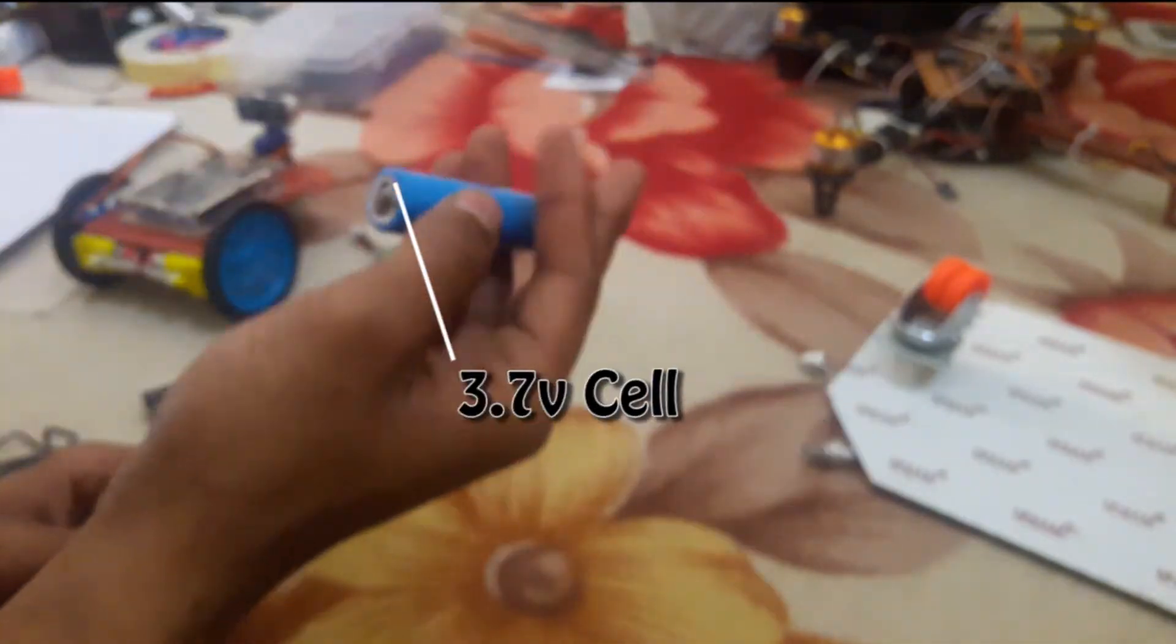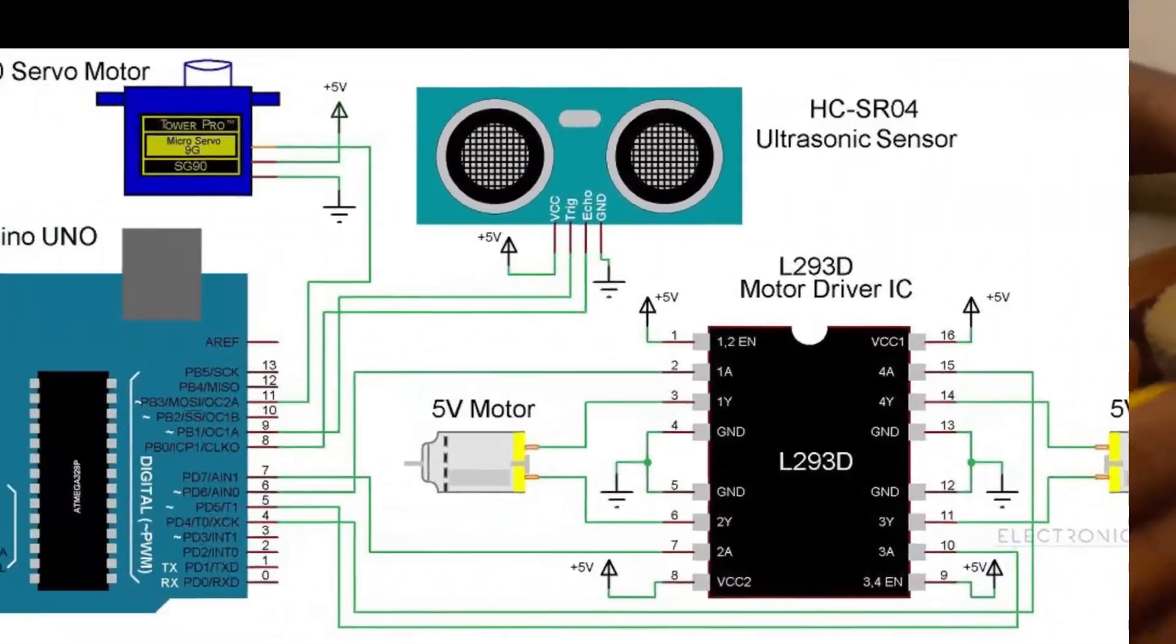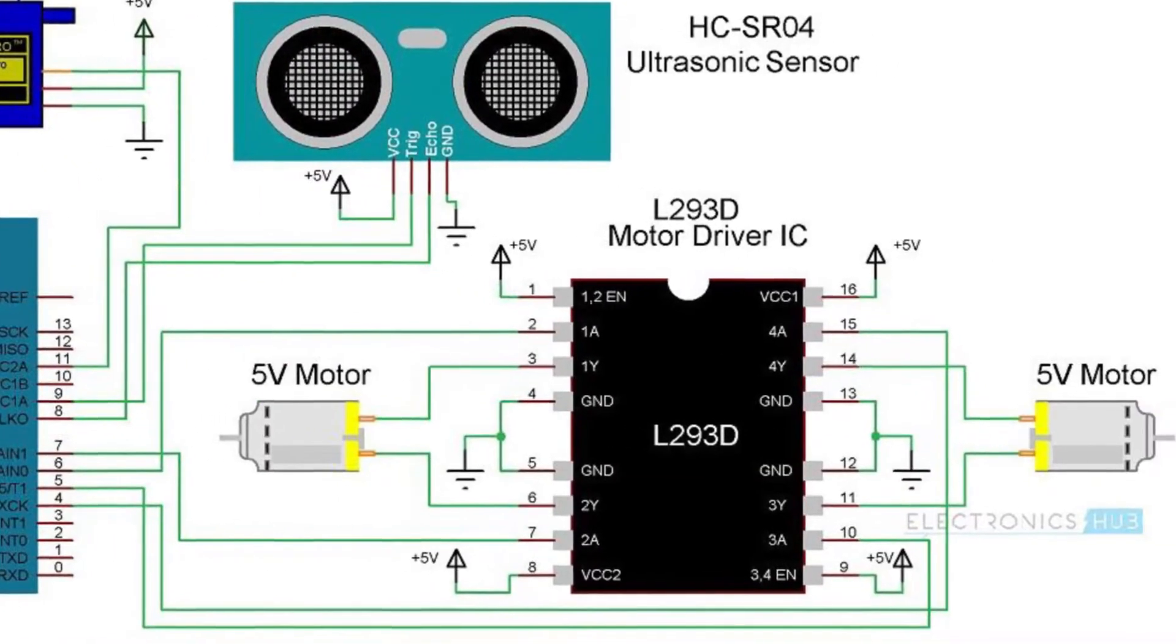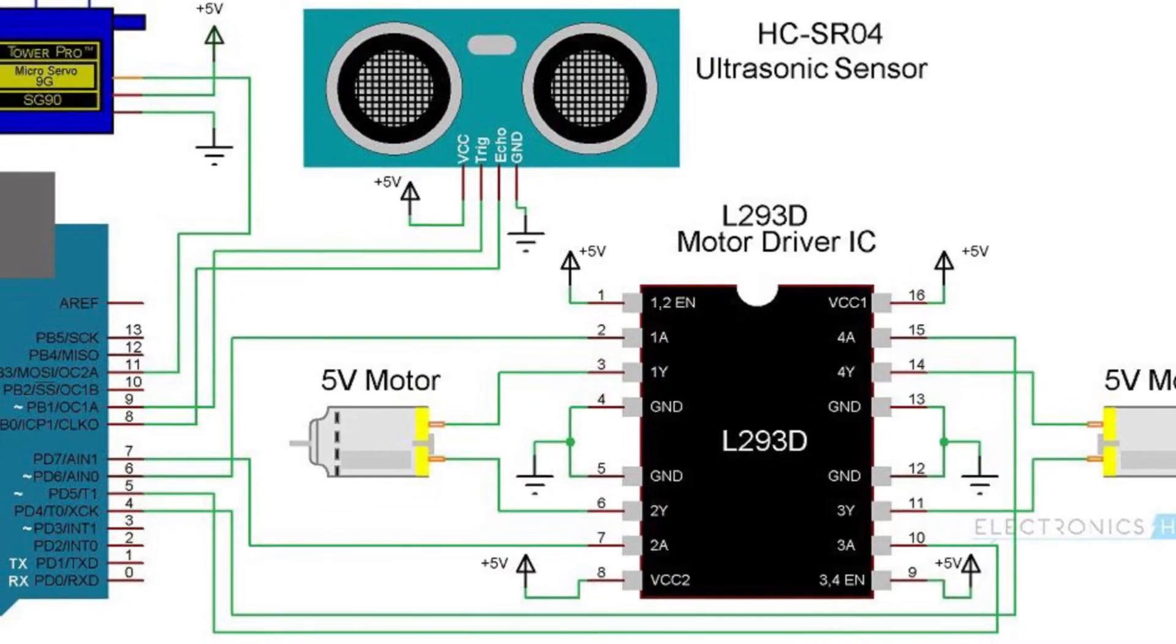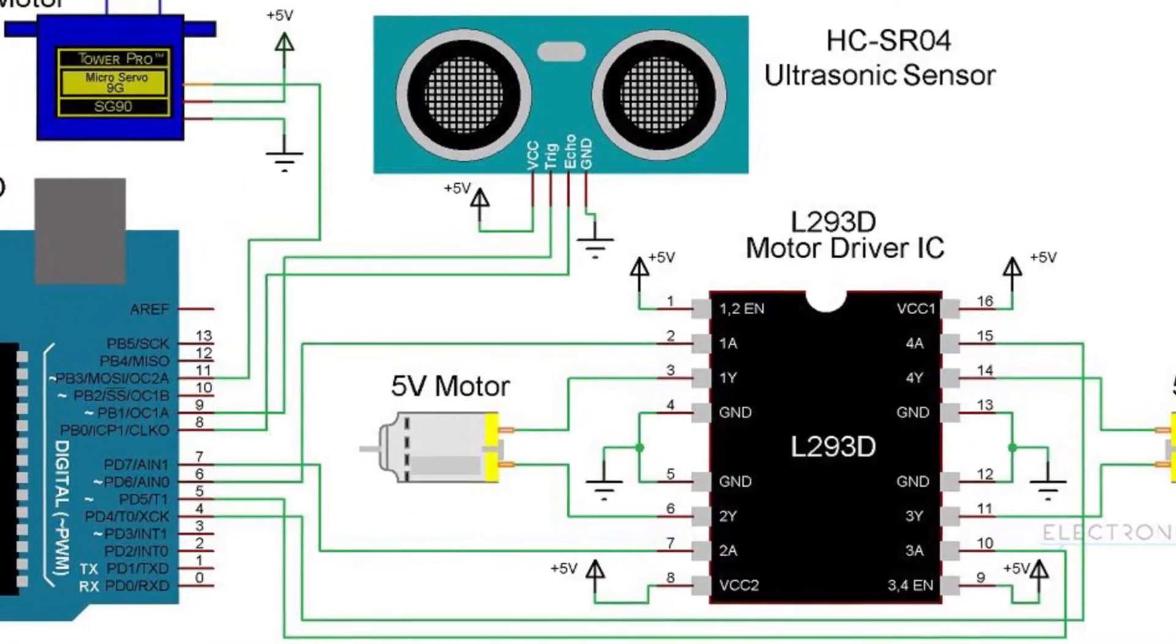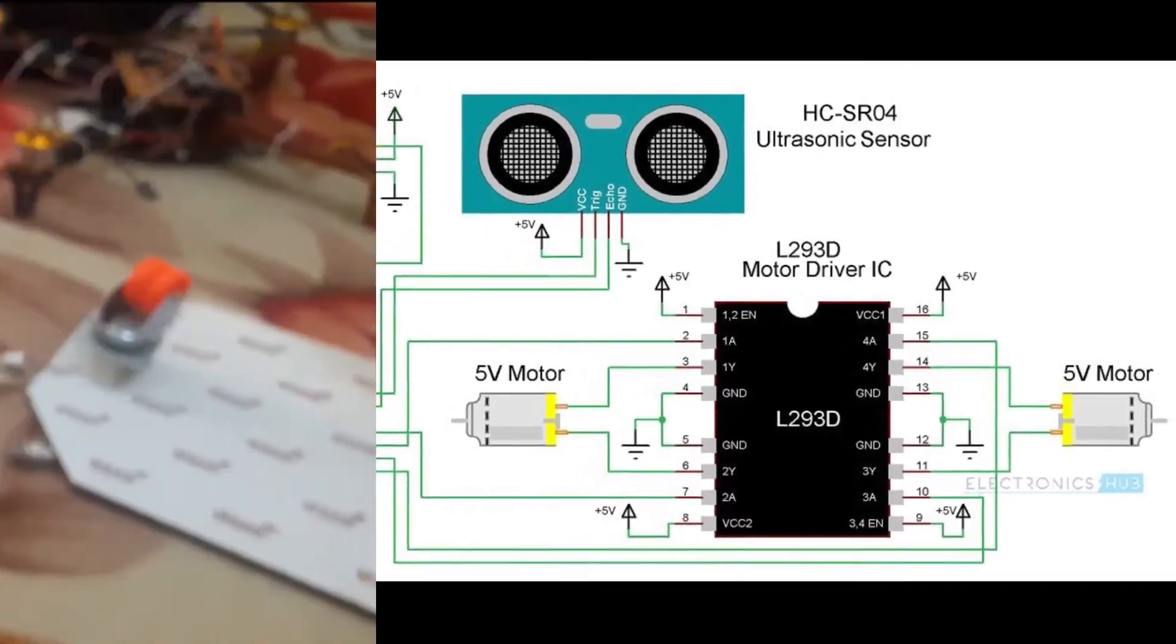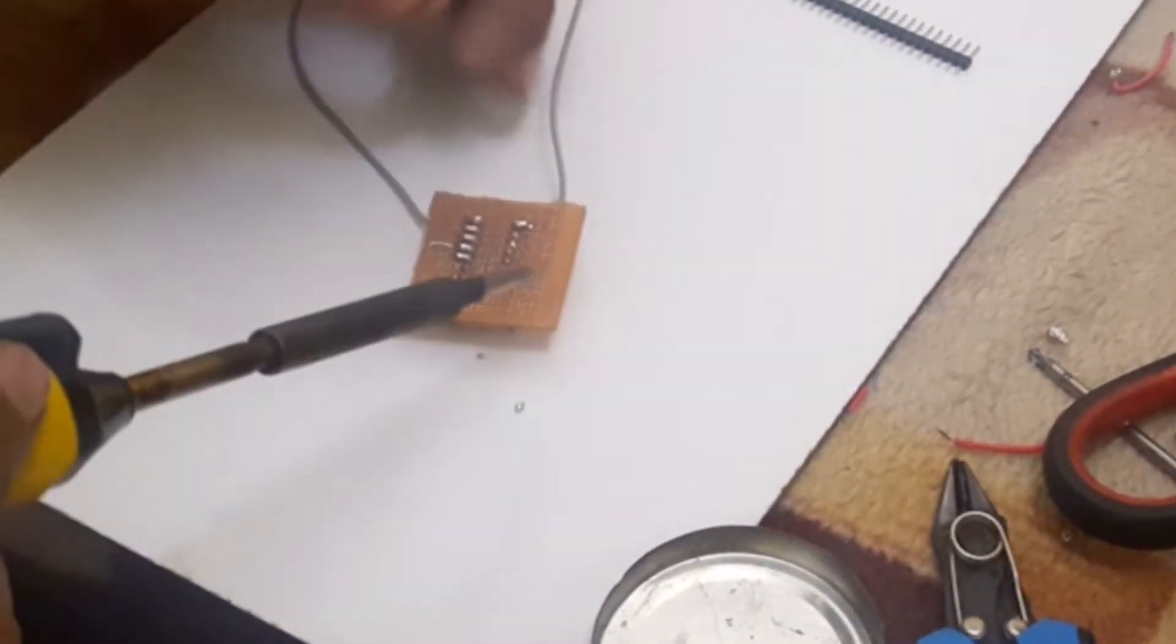Have a look at the circuit. We are using an L293D as a motor driver, HC-SR04, servo on pin 11, and trigger echo on pins 8 and 9. So let's start soldering.